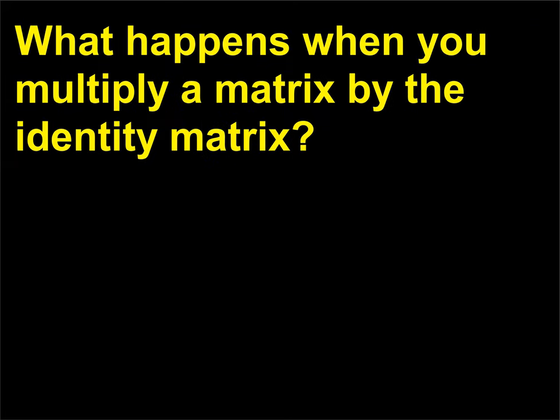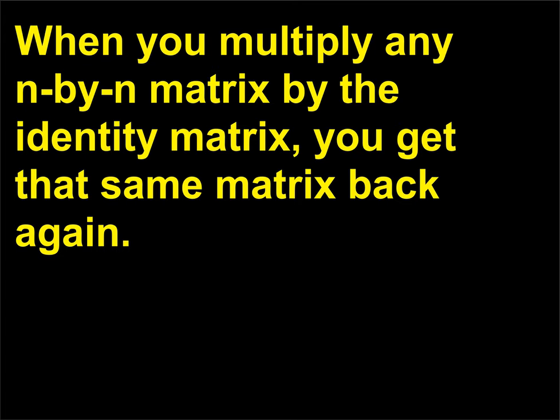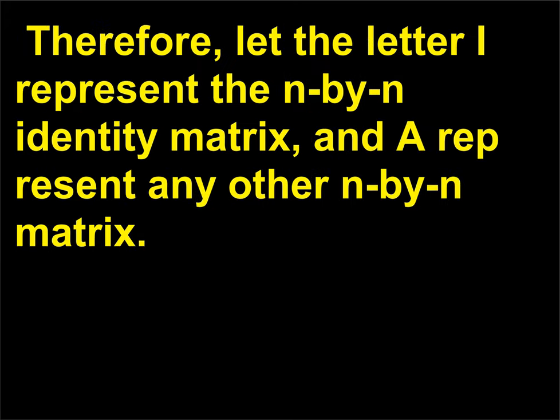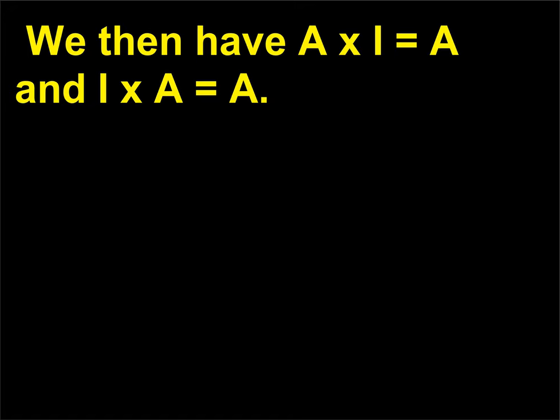What happens when you multiply a matrix by the identity matrix? When you multiply any N×N matrix by the identity matrix, you get that same matrix back again. Therefore, let I represent the N×N identity matrix and A represent any other N×N matrix. We then have A × I = A and I × A = A.